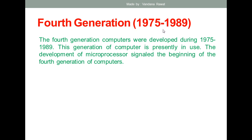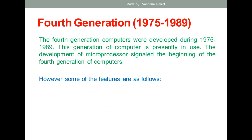In this generation the technology which has been used is the microprocessor. The development of the microprocessor signaled the beginning of the fourth generation computer. In previous generations, vacuum tubes were used, and after that transistors were used, so different types of technology have been involved according to different generations.